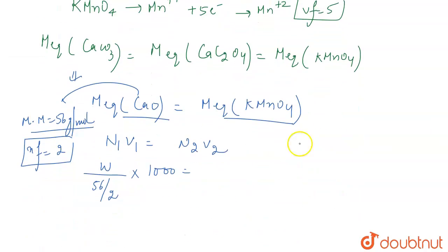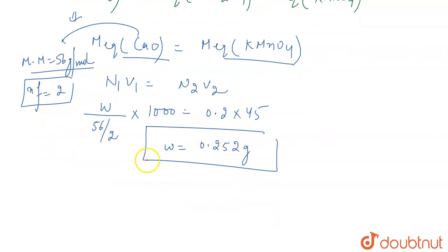Here the volume we have taken is 1000 ml. From here, the weight will come out to be 0.252 grams. This is the weight of calcium carbonate.